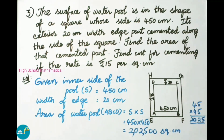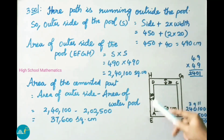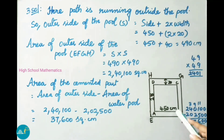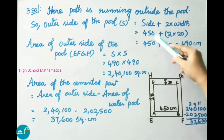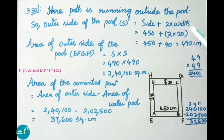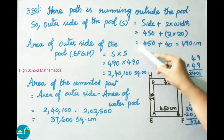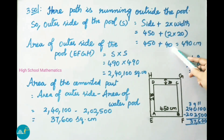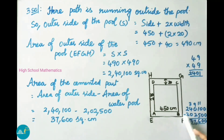Now we find the outer side area. The path runs outside the pool, so outer side equals inner side plus 2 times width, which equals 450 plus 2 into 20. That is 450 plus 40, giving 490 centimeter. Therefore the outer side of the pool is 490 centimeter.